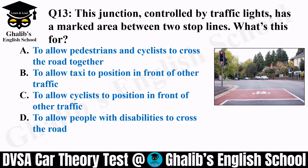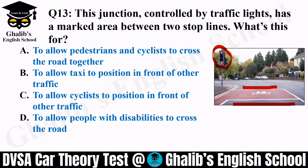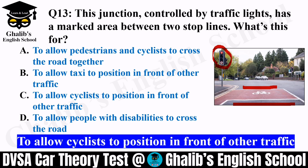Question 13. This junction is controlled by traffic lights and has a marked area between two stop lines — a white first stop line and a second stop line further ahead. Why are these two stop lines there? Options: to allow pedestrians and cyclists to cross together, to allow taxis to position in front of traffic, to allow cyclists to position in front of other traffic, or to allow people with disabilities to cross. These two white lines allow cyclists to position in front of other traffic, so as soon as the lights change, cyclists move first and then you follow.